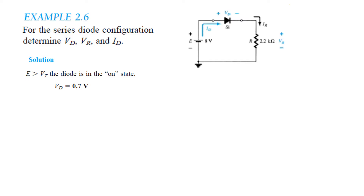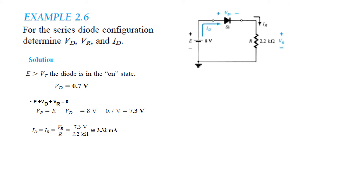First we check that E is greater than VT, so the diode is on. When the diode is on, the voltage across it will be 0.7 volt — we can replace it by a 0.7 volt battery. Using the KVL formula, minus E plus VD plus VR equals zero, so VR equals E minus VD. E is 8 and VD is 0.7, therefore VR is 7.3 volt. Now we find ID: ID equals IR equals VR over R, which is 7.3 divided by 2.2K, giving approximately 3.32 milliampere.